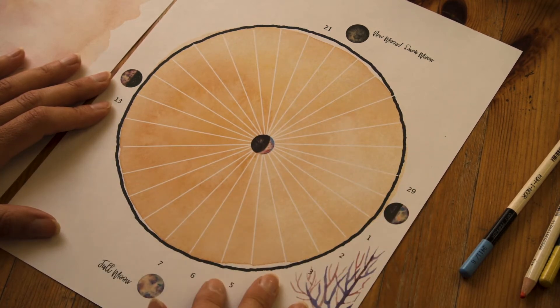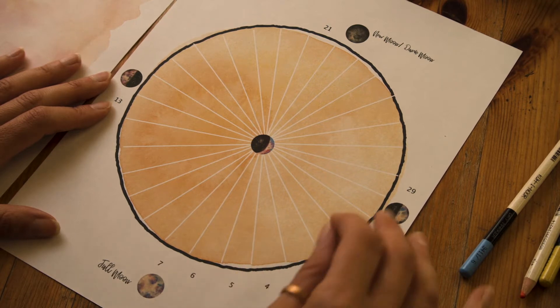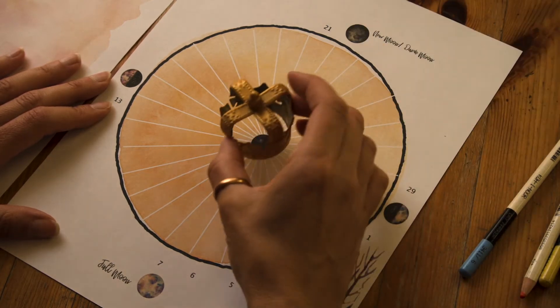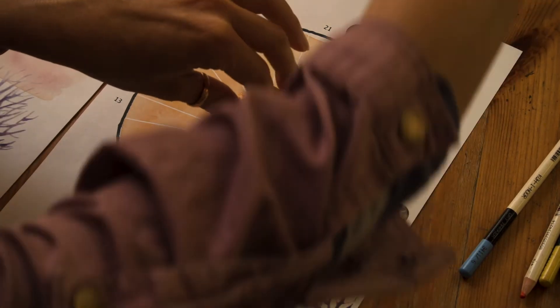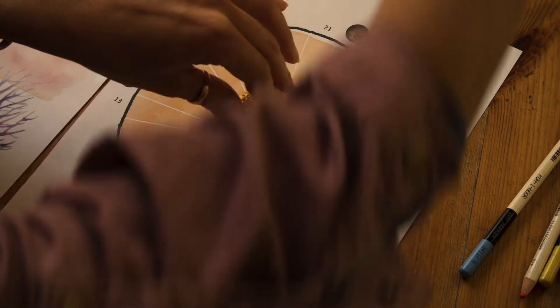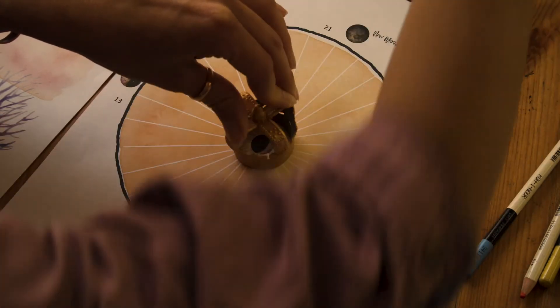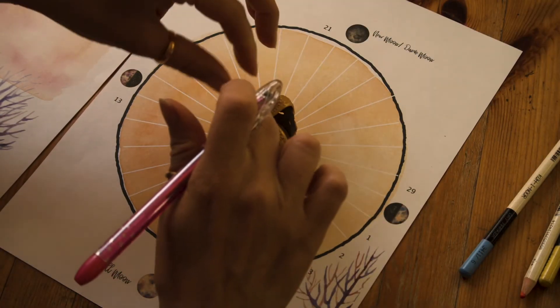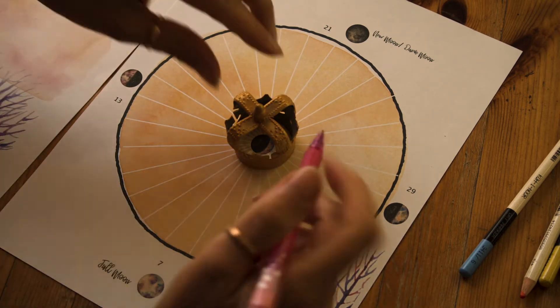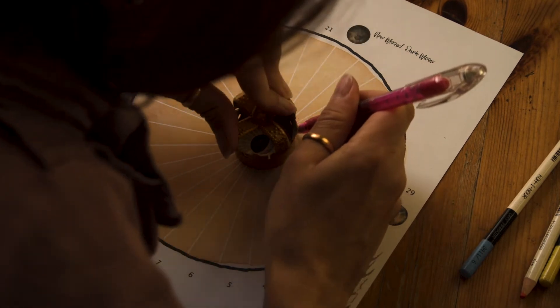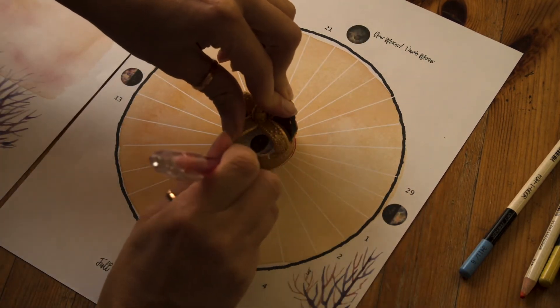You can keep track of all different kinds of things in a moon calendar. Let me show you. First, I like to start off with a little circle in the middle, and this circle is going to keep track of my monthly cycle.